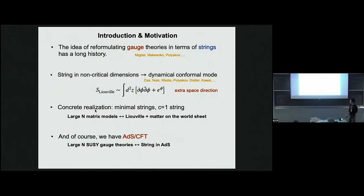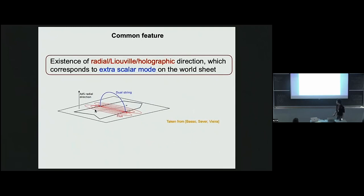The c=1 string is basically the duality between double-scaled large-N matrix models with Liouville theory plus matter on the worldsheet. By now we also have the AdS/CFT correspondence, which avoids this problem in a slightly different way — basically the duality between large-N SUSY gauge theories and strings in AdS. One common feature of both the old matrix model duality and AdS/CFT is the existence of a radial or holographic direction, which basically corresponds to the extra scalar mode on the worldsheet.